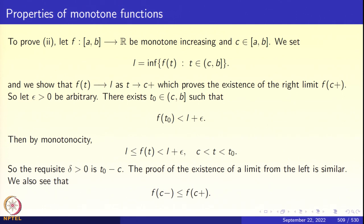Take a function f from [a, b] to ℝ which is monotone increasing, and let us take a point c in the interval [a, b]. Look at the interval which is half open — open from the c end and closed at the b end. You can ignore what happens near b; concentrate on what happens near c only. Since it is monotone increasing, take the infimum of f(t) as t varies from c to b, c excluded. Call this infimum l, and let us show that f(t) tends to l as t tends to c+. That will prove that a monotone function has a right-hand limit at each point.